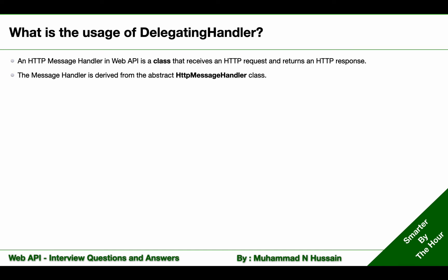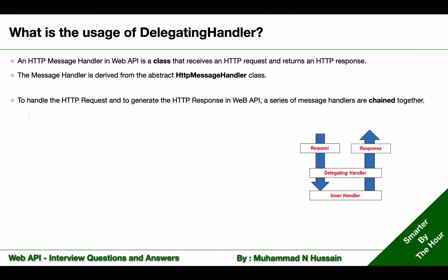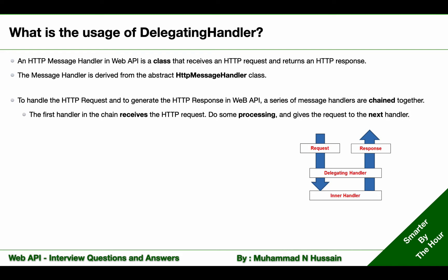To handle the HTTP request and to generate the HTTP response in Web API, a series of message handlers are chained together. In that chain, the first handler receives the HTTP request, does some processing, and gives the request to the next handler. The next handler does some processing and passes the request to the next handler, and so on. At some point, the response is generated and goes back up in the chain.